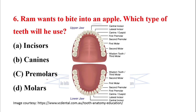Next question: Ram wants to bite into an apple — which type of teeth will he use? To bite into a food particle, incisors are involved, so the correct option is incisor. We have 8 incisors, 4 canines, 8 premolars, and 12 molars — 32 total teeth.